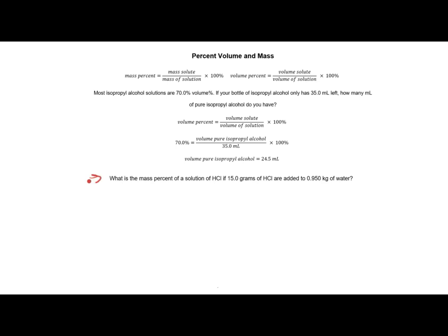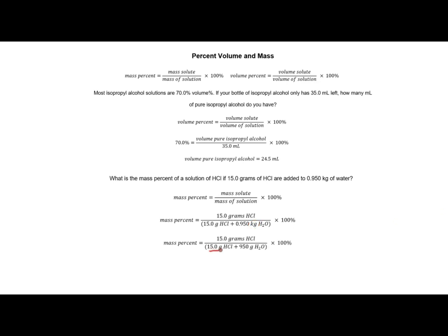Let's do a mass percent problem. What is the mass percent of a solution of hydrochloric acid if 15 grams of hydrochloric acid are added to 0.95 kilograms of water? Using the mass percent equation: my solute is HCl at 15 grams, and my solution mass is solute plus solvent. I have a unit issue — grams and kilograms — so I convert 0.95 kilograms to 950 grams. Adding 15 grams plus 950 grams gives 965 grams of solution, and a mass percent of 1.55%.